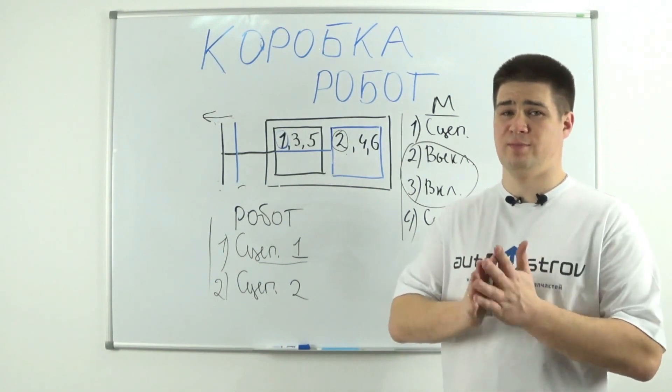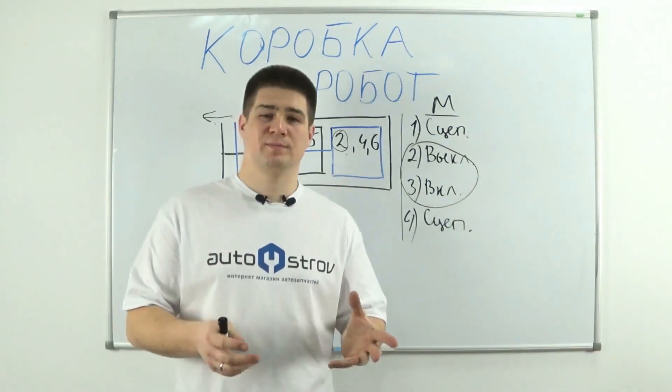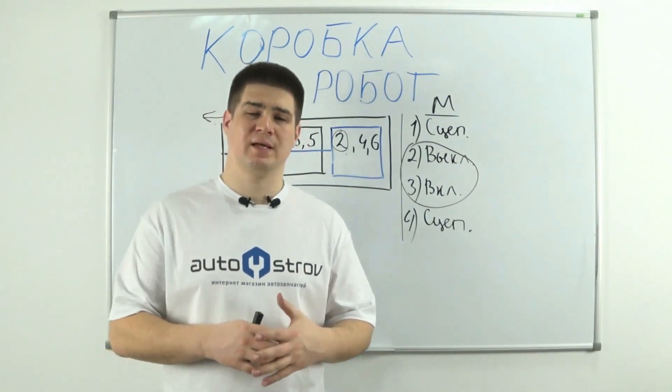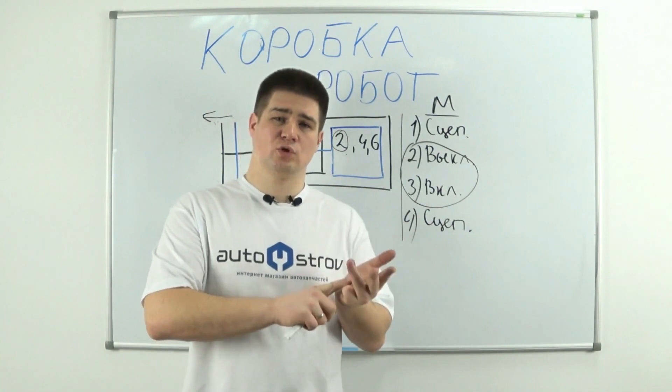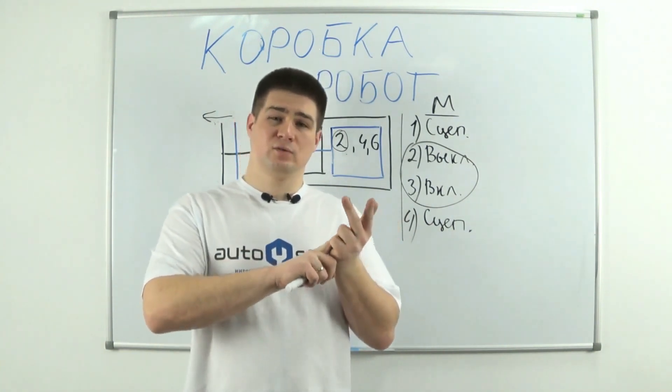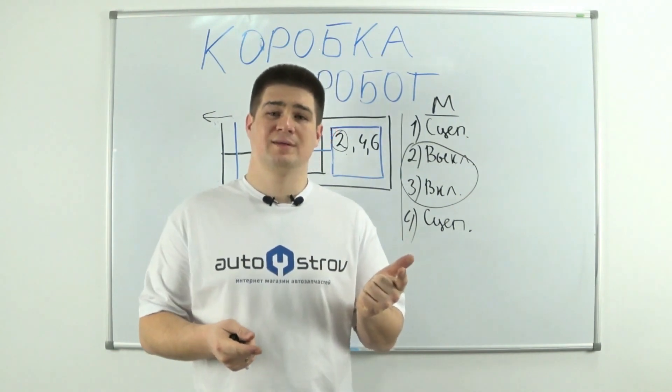A robotic gearbox has several advantages over an automatic transmission. The first advantage is low fuel consumption. The second is the best dynamics of the car. Third, the production cost of a robotic gearbox is slightly lower than an automatic transmission.